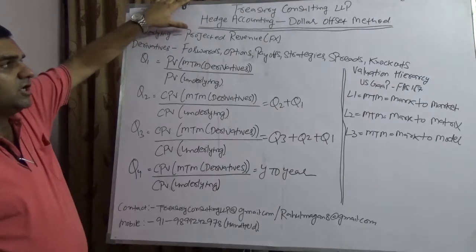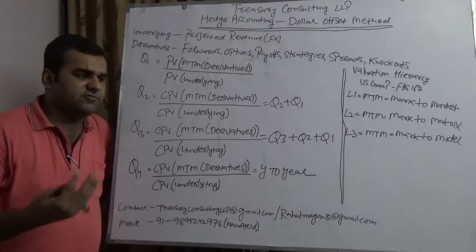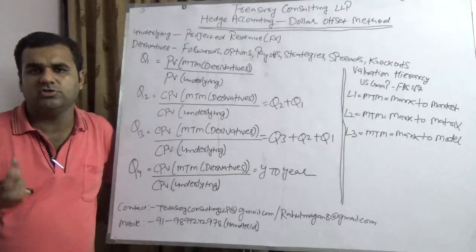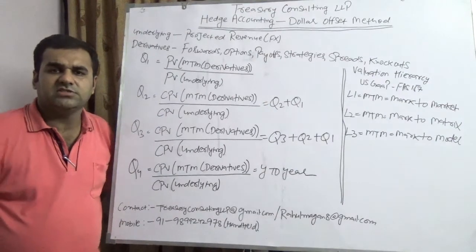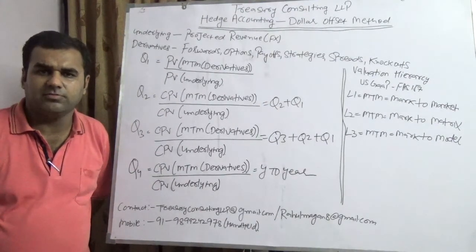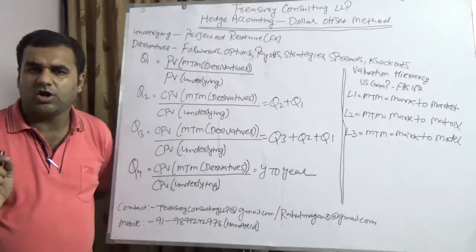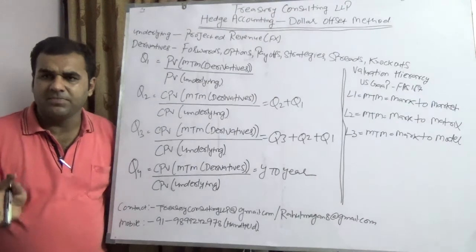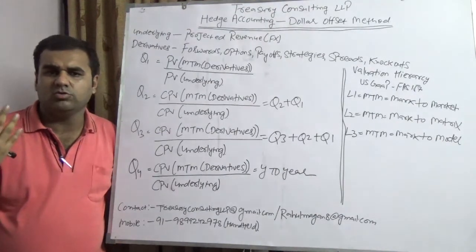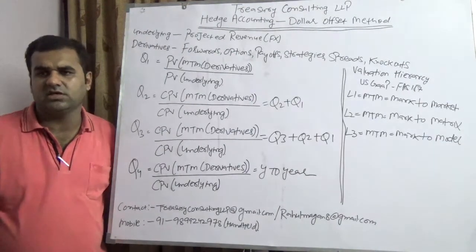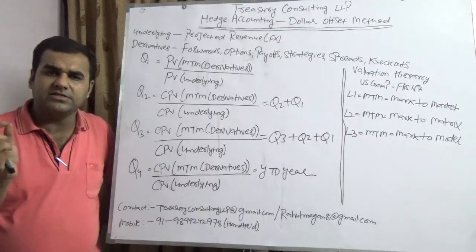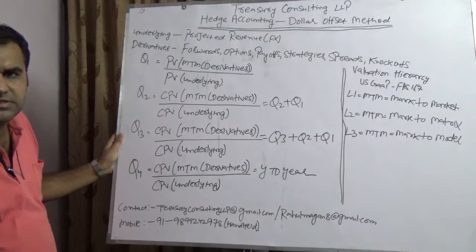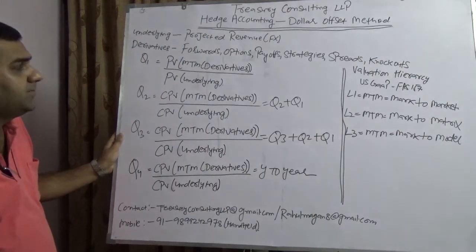This is the dollar offset method. We are going to speak about hedge accounting. In the last few videos we had a word about hedge accounting — it is nothing but a set of techniques which will allow you to mitigate the volatility of derivative instruments in your P&L. Take a simple example of Infosys. If Infosys is having approximately 13 billion dollars of foreign currency receivables in the books, they are not interested in having the M-to-M impact in the P&L, because that would hit the EPS of Infosys. So what they are doing is coming up with something known as hedge accounting — how to mitigate the impact of M-to-M in your books.